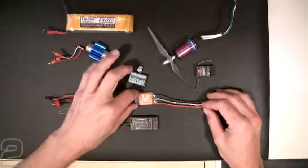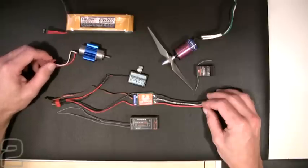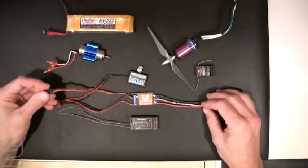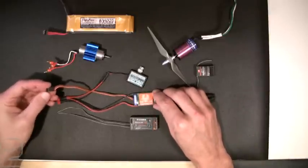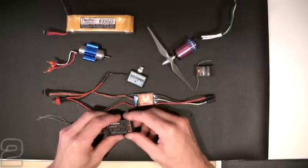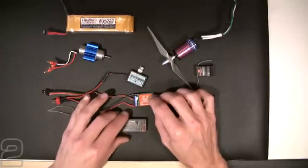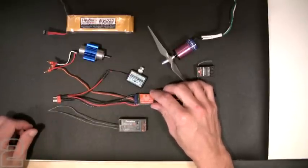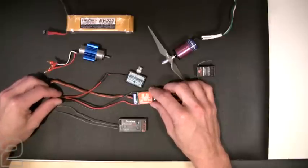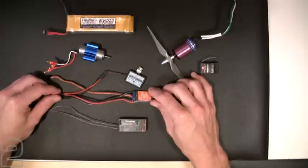So most ESCs do have BECs, the BEC stands for battery eliminator circuit. A battery eliminator circuit pulls power from your main flight battery, back feeds it through the radio connection coming from the ESC into your receiver, and powers all your servos and any other electrical devices you have on board the aircraft. Now there are amperage limitations to a BEC built into electronic speed control, so always check your demand budget to make sure that you aren't exceeding the capabilities of the BEC built into your electronic speed control.